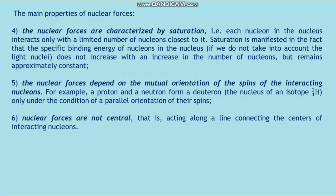Fifth, nuclear forces depend on the mutual orientation of the spins of the interacting nucleons. For example, a proton and a neutron form a deuteron — the nucleus of the isotope of hydrogen — only under the condition of parallel orientation of their spins. Sixth, nuclear forces are not central, that is, they do not act along the line connecting the centers of the interacting nucleons.